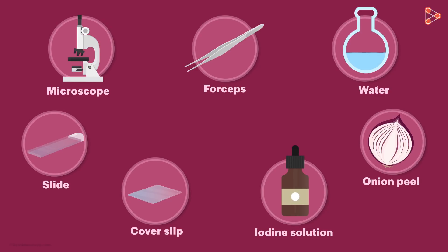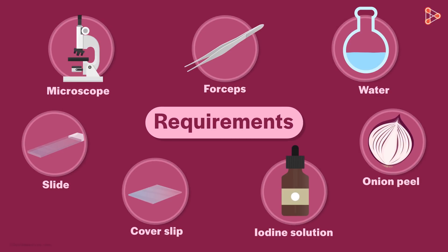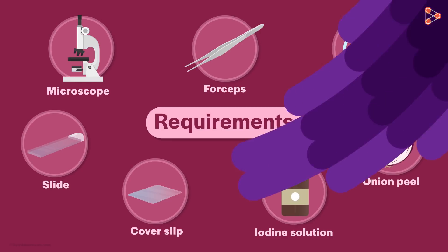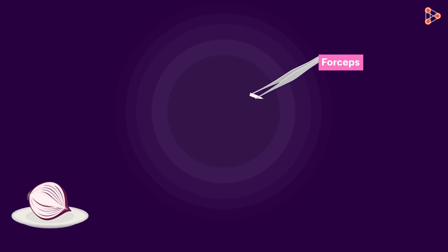Now that we are all set with the equipment needed, let's begin with the amazing experiment of observing the onion cells under the microscope. Firstly, we take the onion peel and with the help of the forceps, pull away the thin lining from the inner surface.